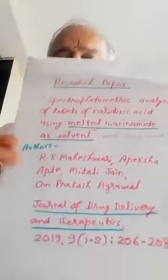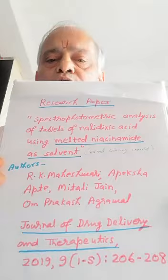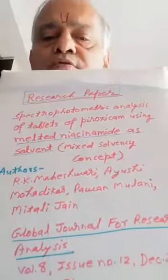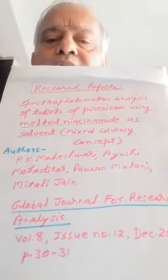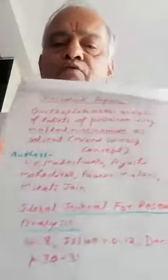I forgot to give the reference for the nalidixic acid tablet powder estimation — you can note it down, and a complete paper is available. Similarly, there is another published paper on piroxicam tablet analysis — the complete reference is shown here. In the case of piroxicam, the melting point of piroxicam is 198 degrees centigrade and the melting point of niacinamide is 135 degrees centigrade.